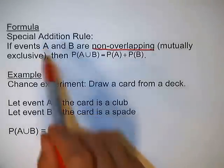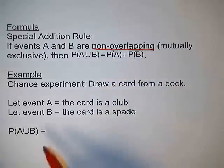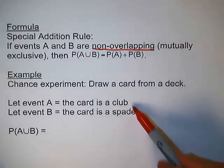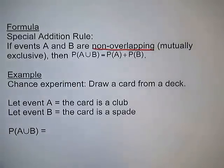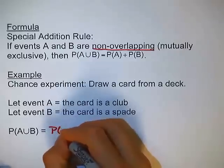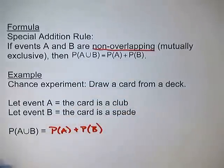To use the special addition rule, we have to first decide whether or not the events are non-overlapping. Can you get a card that is both a club and a spade? No, you can't. So these events are non-overlapping or mutually exclusive. So we can just say that the probability of A or B equals the probability of A plus the probability of B.